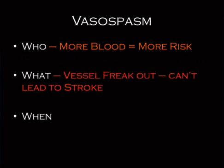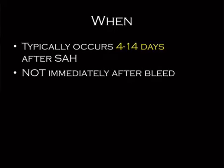When does vasospasm occur? This is probably the most testable point. It does NOT occur right away — it occurs at four to fourteen days out. The vessels have to bake in the blood for a while, or the oxyhemoglobin has to start affecting the nitric oxide pathway. The classic scenario is: patient bleeds, gets their aneurysm clipped, then a couple of days later develops vasospasm.